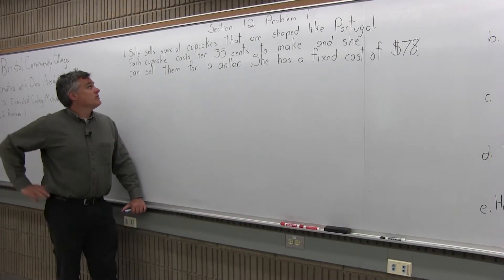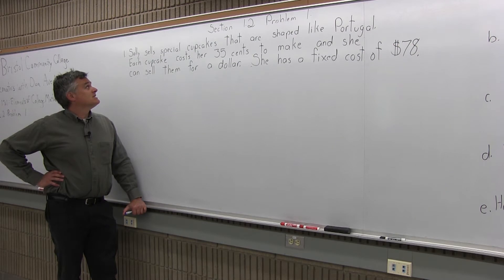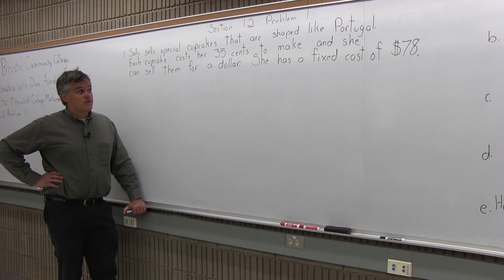This is problem number 1 from Section 1.2. It says Sally sells special cupcakes that are shaped like Portugal. Each cupcake costs her 35 cents to make and she can sell them for a dollar. She has a fixed cost of $78.